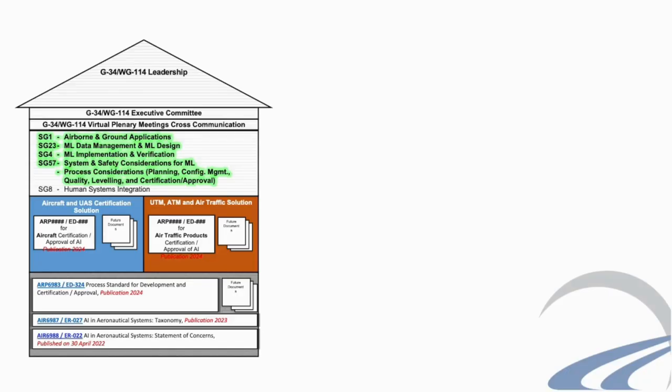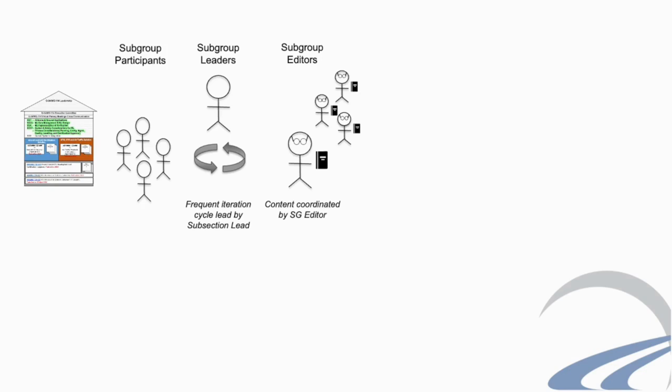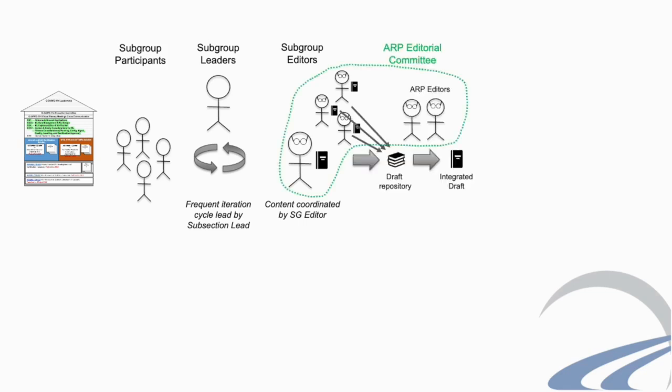The Joint Committee is organized into four active subgroups, which are described in more detail in other videos in this series. Each subgroup is responsible for different sections of the document, and each subgroup names a subgroup editor as their representative on the EDC. The EDC is led by the document co-editors, who coordinate the inputs from the subgroups and produce integrated draft versions of the document.